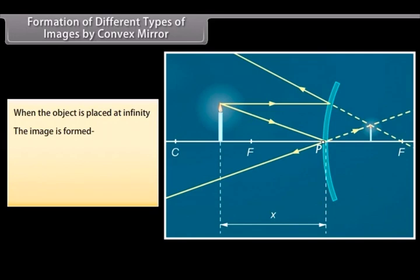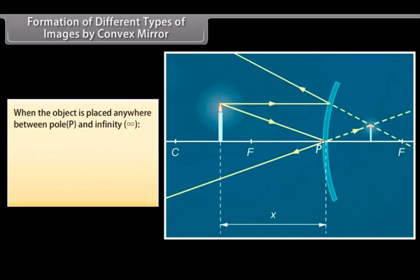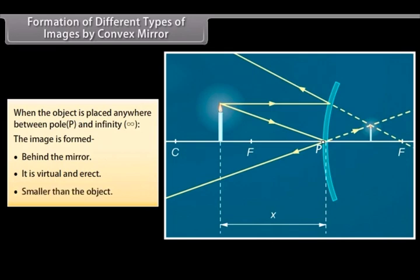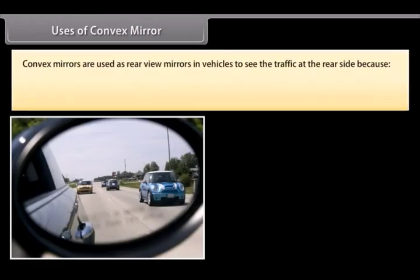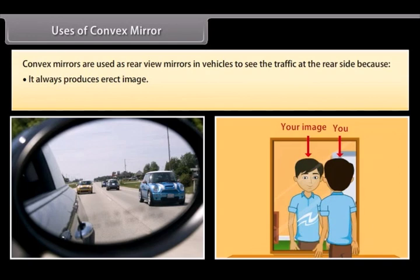Formation of different types of images by convex mirror. When the object is at infinity, the image is formed behind the mirror — it is virtual and erect, and smaller than the object. When the object is placed anywhere between pole P and infinity, the image is formed behind the mirror — it is virtual and erect, and smaller than the object. Uses of convex mirrors: convex mirrors are used as rear-view mirrors in vehicles to see the traffic at the rear side, because they always produce an erect image, the size of the image is small, and we can see a wide field of view of traffic behind.